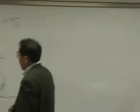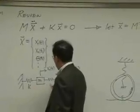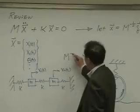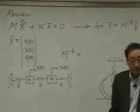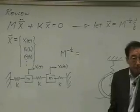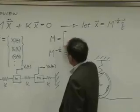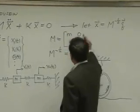For example, if this is m and m, this is k and k and k, what is m to the minus one half? Then start with what you know. What does the m matrix look like? The m matrix look like this, right?